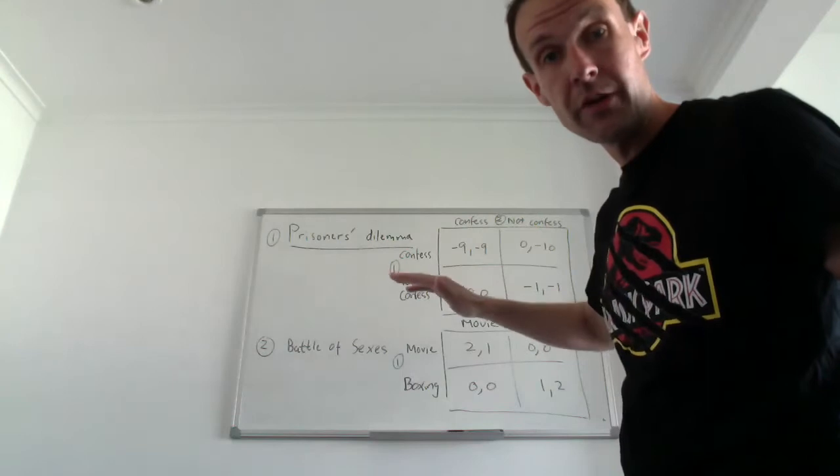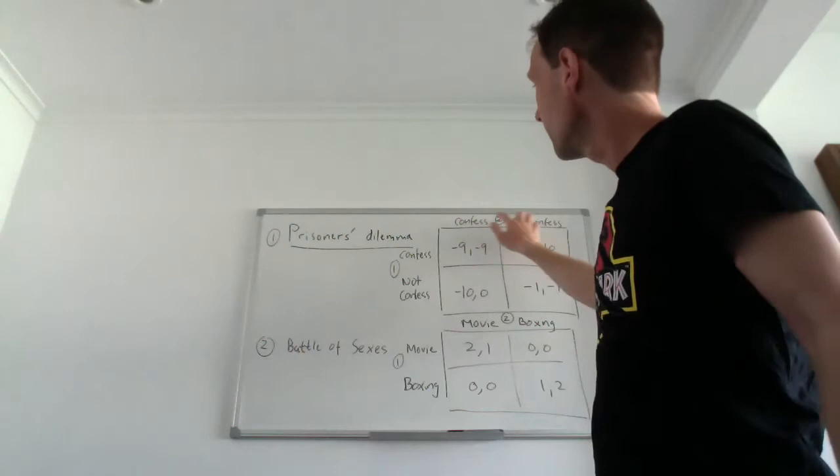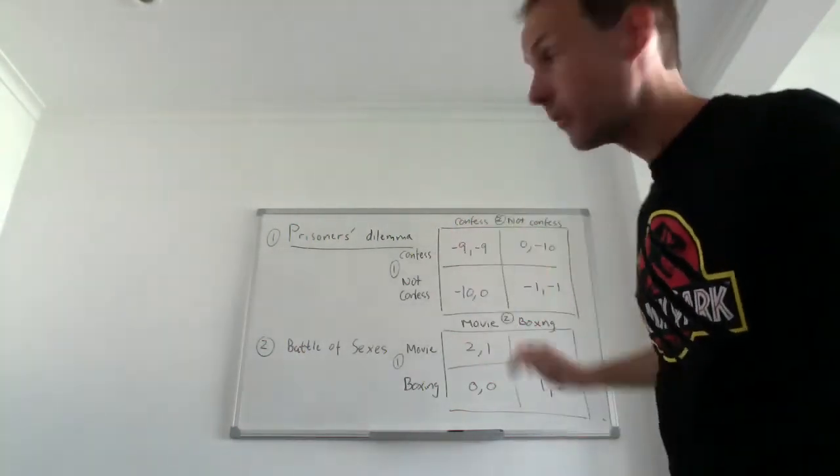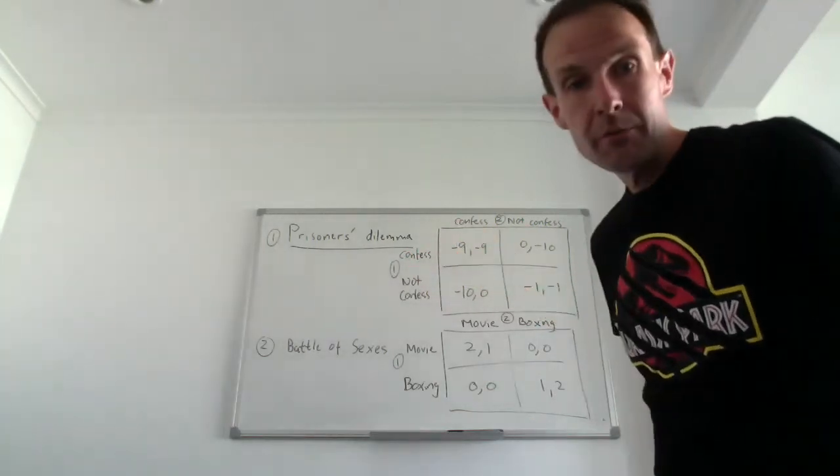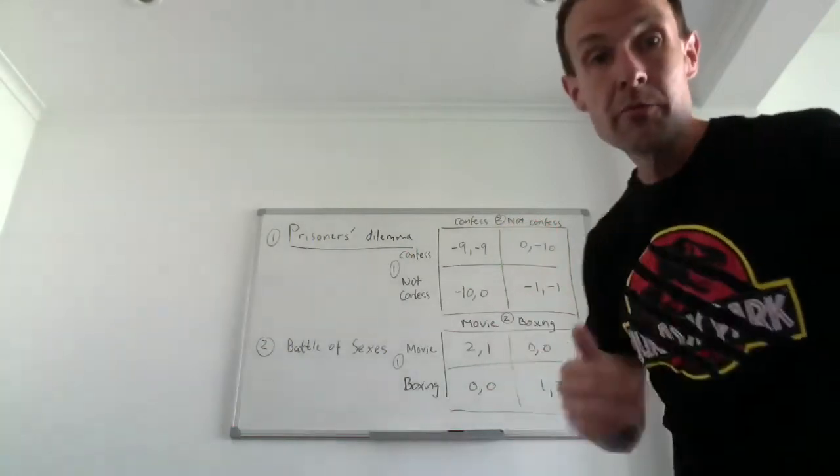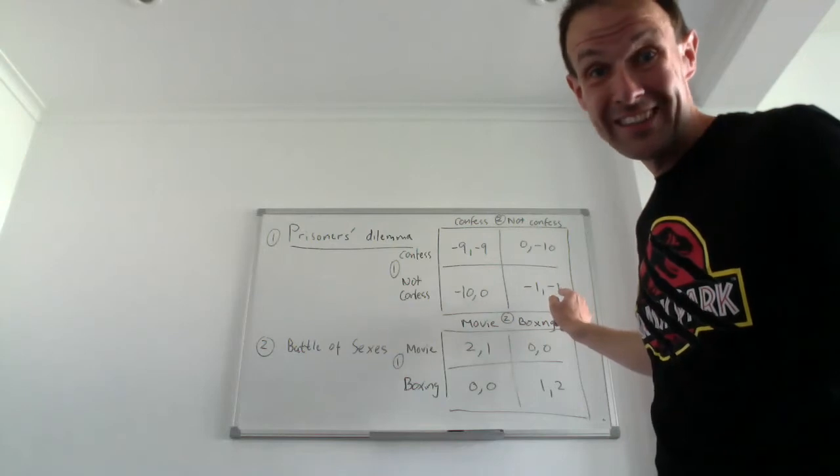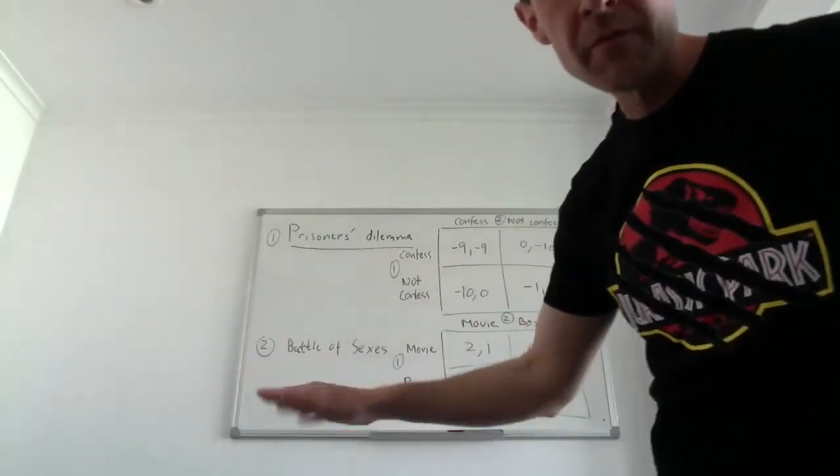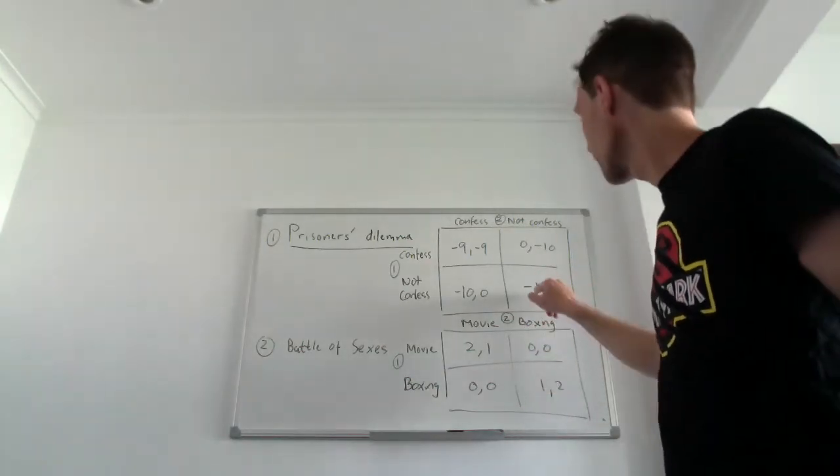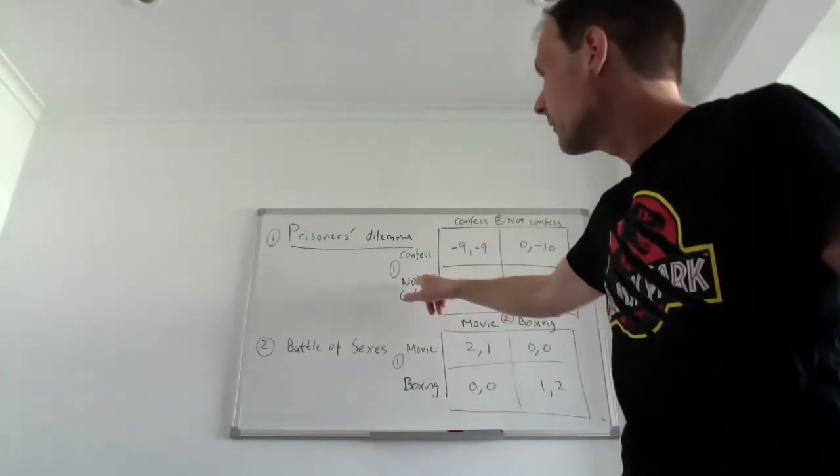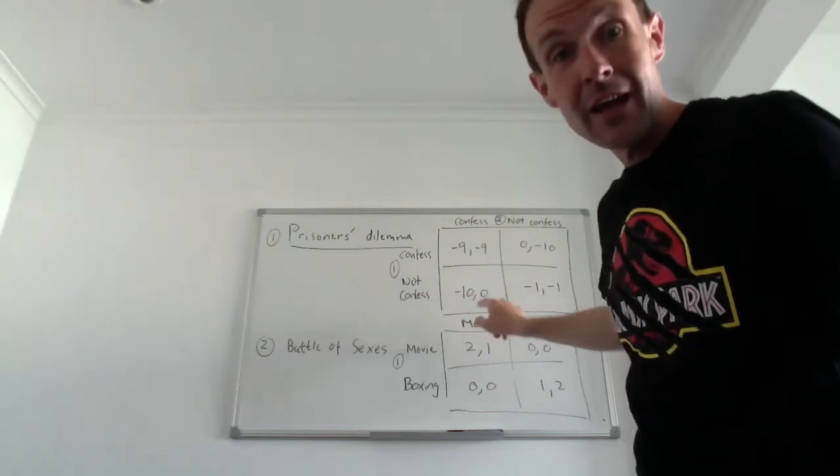I have two strategies to play. Let me say I'm criminal one and you are criminal two. I have two options: I can confess to my crime or I can just keep shut and keep the agreement, the original agreement with you guys, and we shouldn't say, we don't say anything at all. You have the same options.